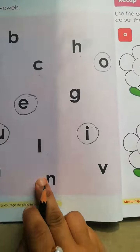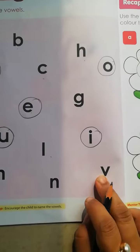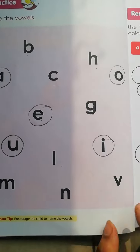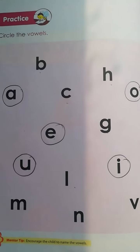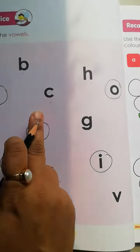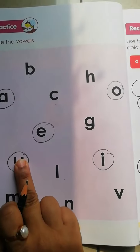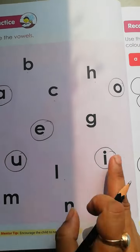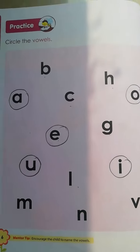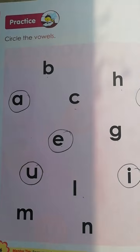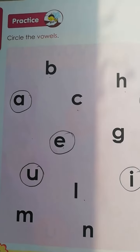M, N, V — not all vowels. Okay. A, E, I, O, U. These five are vowels.